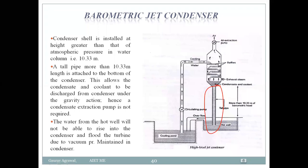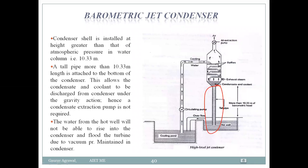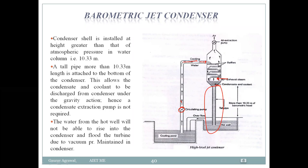The atmospheric pressure gap corresponds to approximately 10.33 meters of water column. This allows the condensate and coolant to be discharged from the condenser under gravity action, so a condensate extraction pump is not required here. The remaining structure includes a circulating pump and a cooling pond.